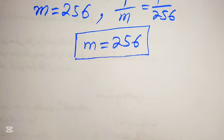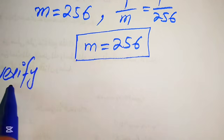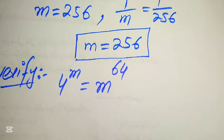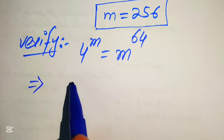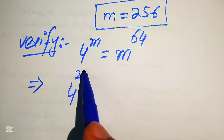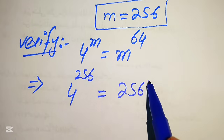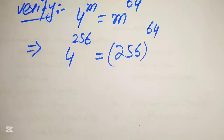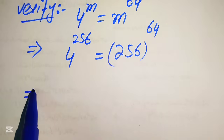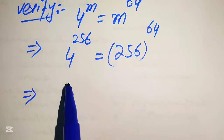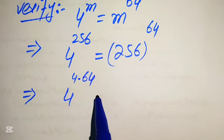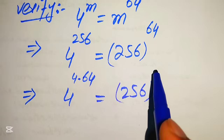We verify this value by substituting m = 256 into the original equation 4^m = m^64. The left hand side becomes 4^256 and the right hand side becomes 256^64. We rewrite 256 as 4×64, so the left hand side is 4^(4×64) written as (4^4)^64, which equals 256^64.